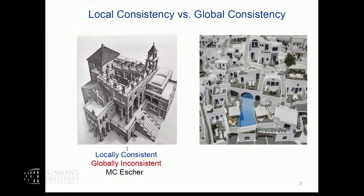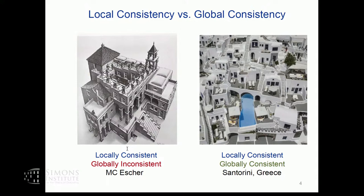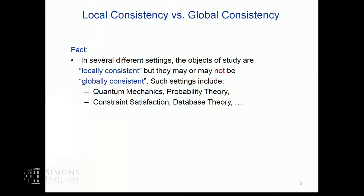The image on the right, at first sight, looks almost as paradoxical as the image on the left. Yet this is something which is physically realized — perhaps the Greeks in the audience would recognize this is from Santorini, the island of Santorini in Greece. We have this interplay between local consistency versus global consistency, and in science there are several different settings where objects of study are locally consistent but globally inconsistent. Such settings include quantum information theory — where the term is 'contextuality' — probability theory, constraint satisfaction, and database theory.